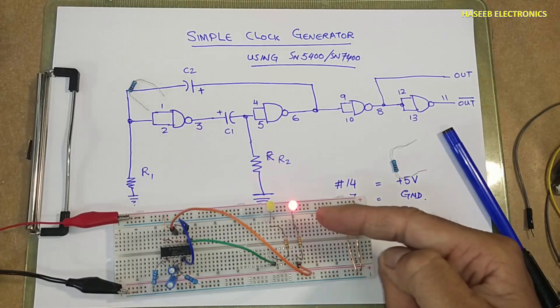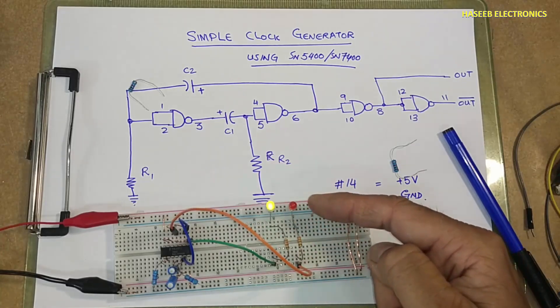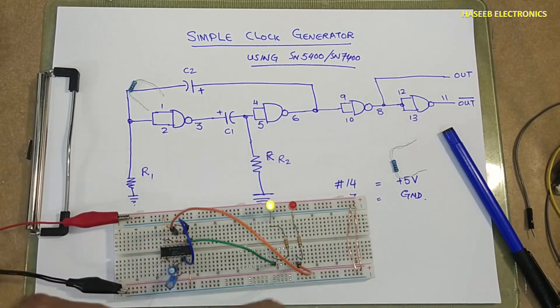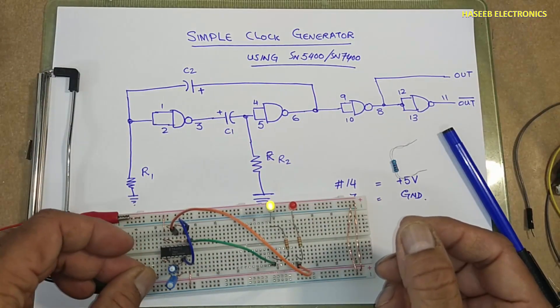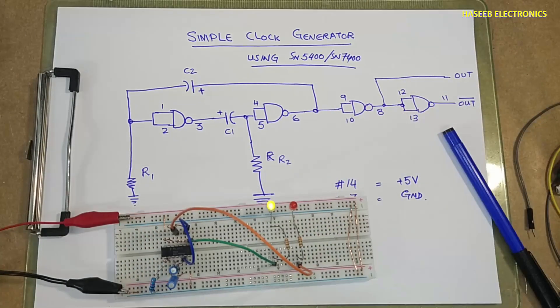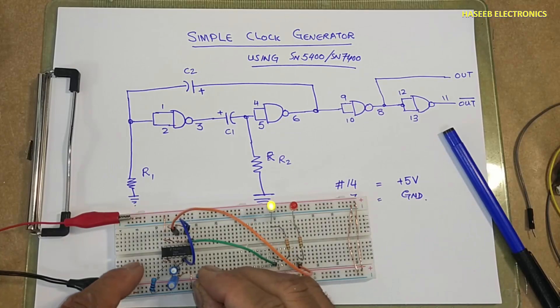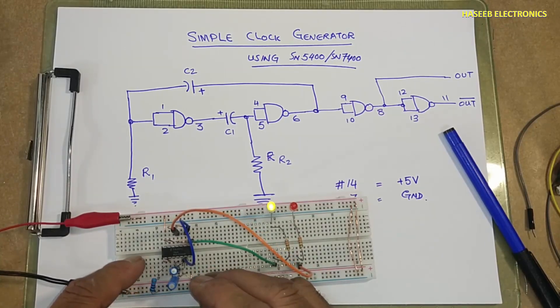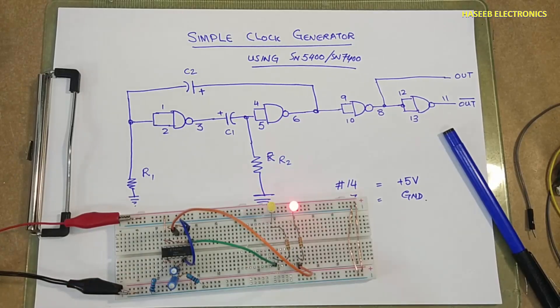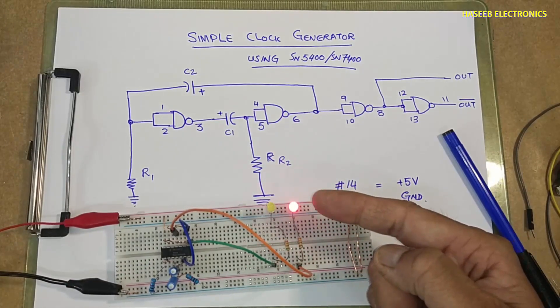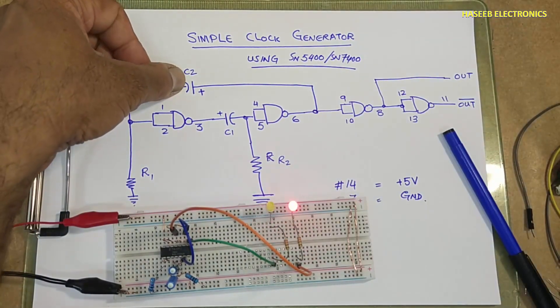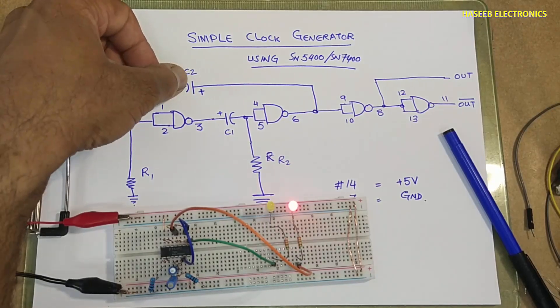We can see the frequency increased. If you will decrease the resistor size to 1 kilo ohm, frequency will increase more. So we can adjust the resistor.